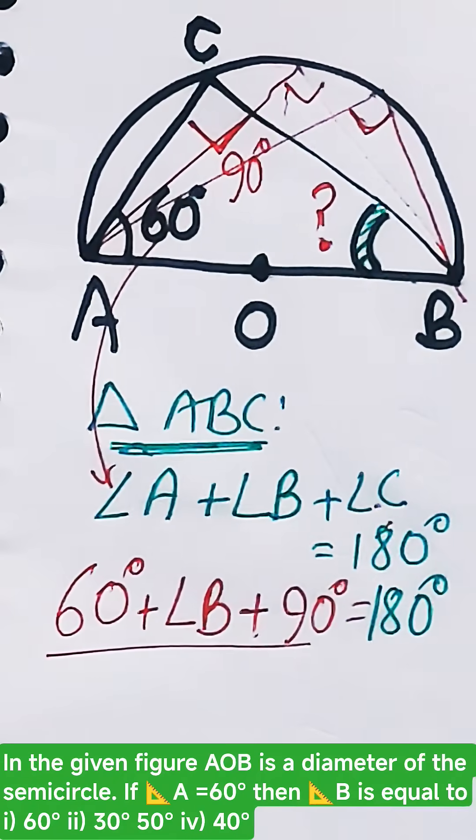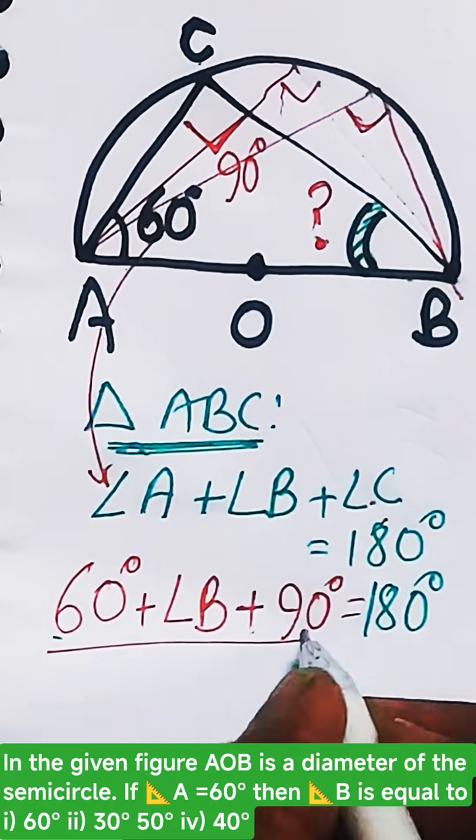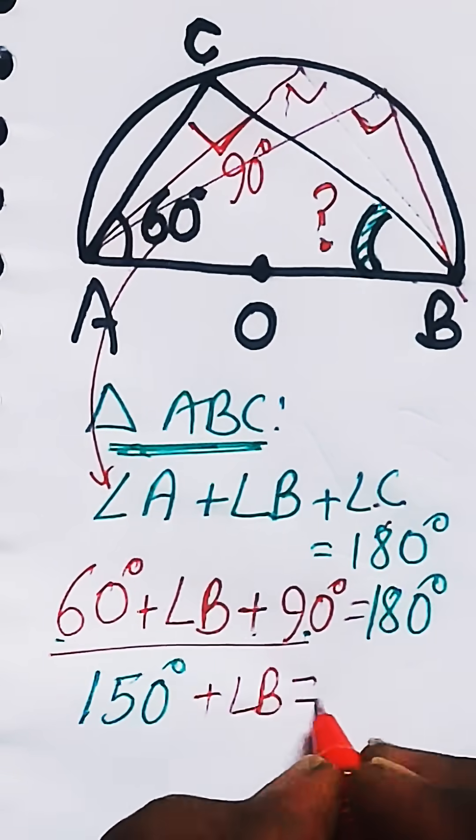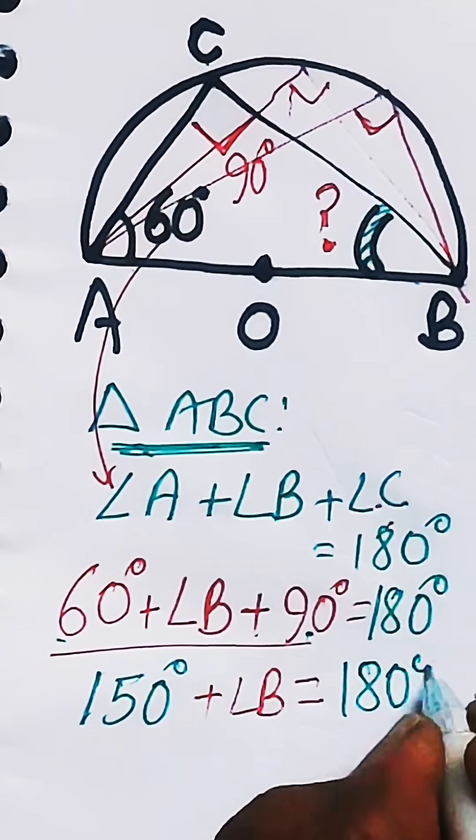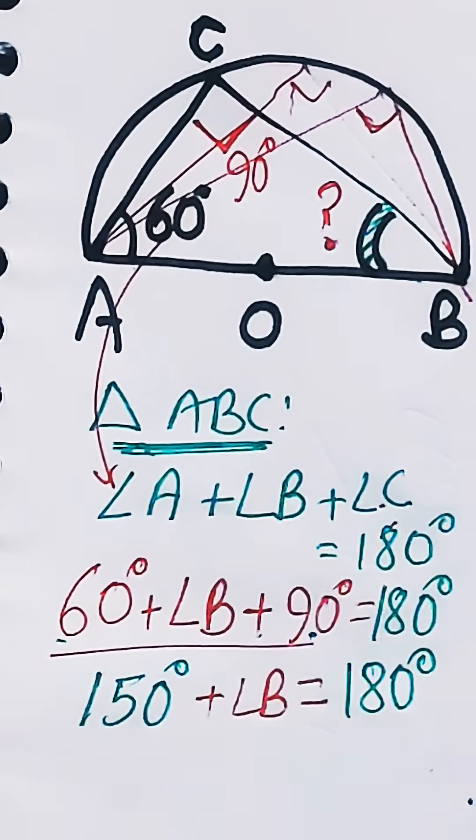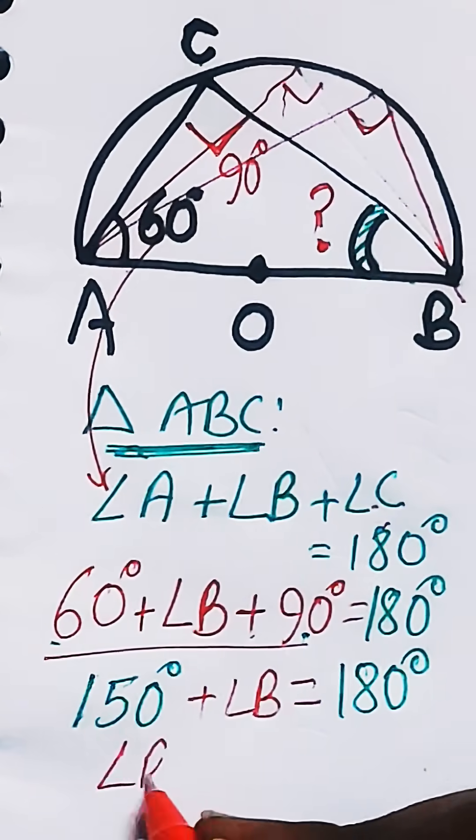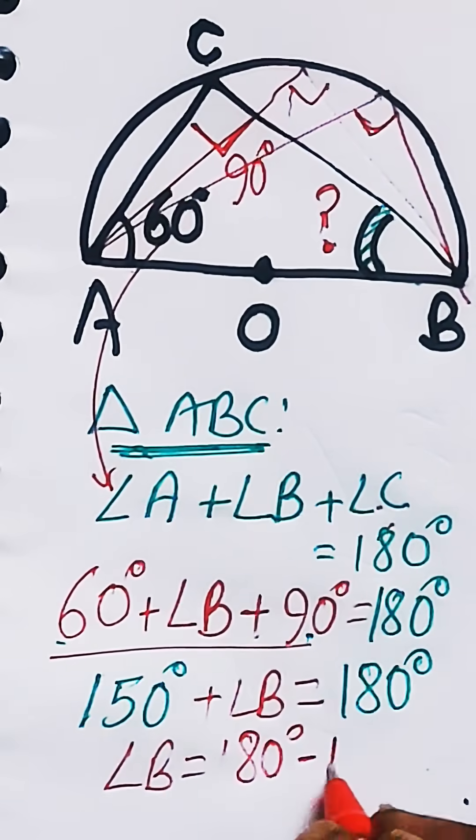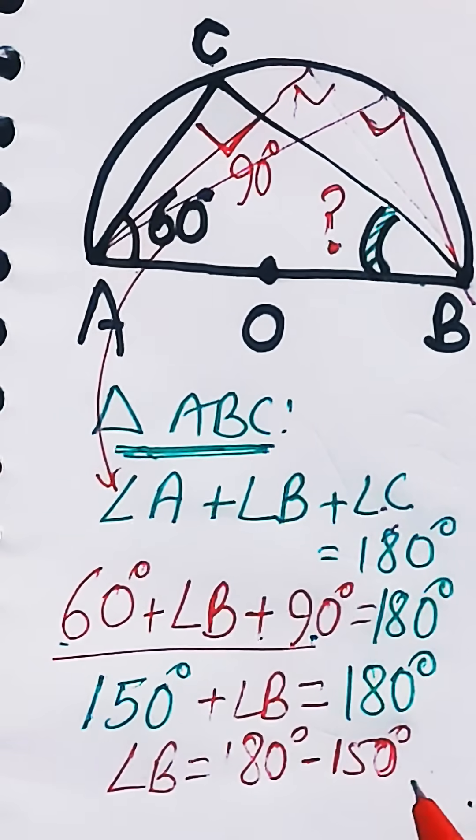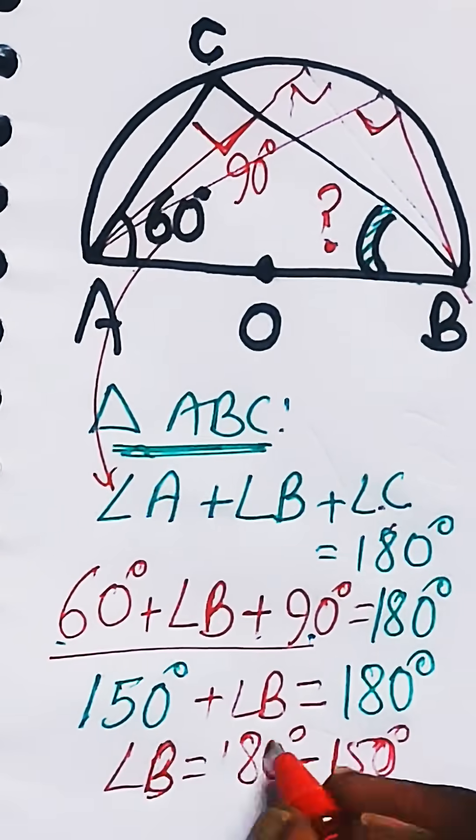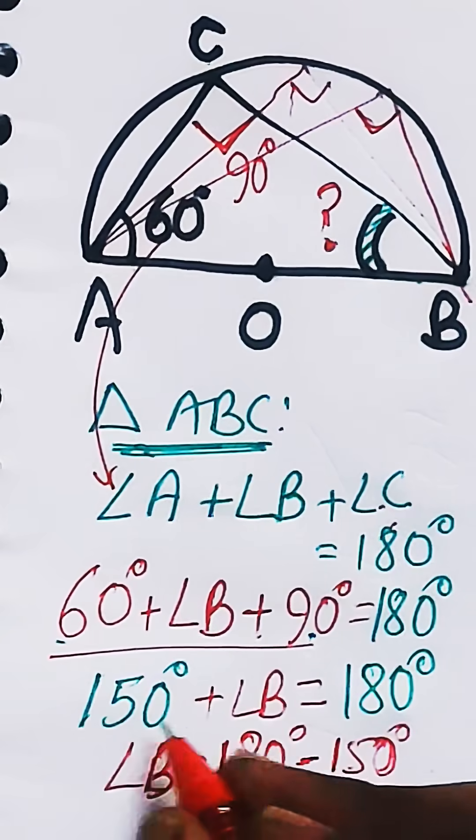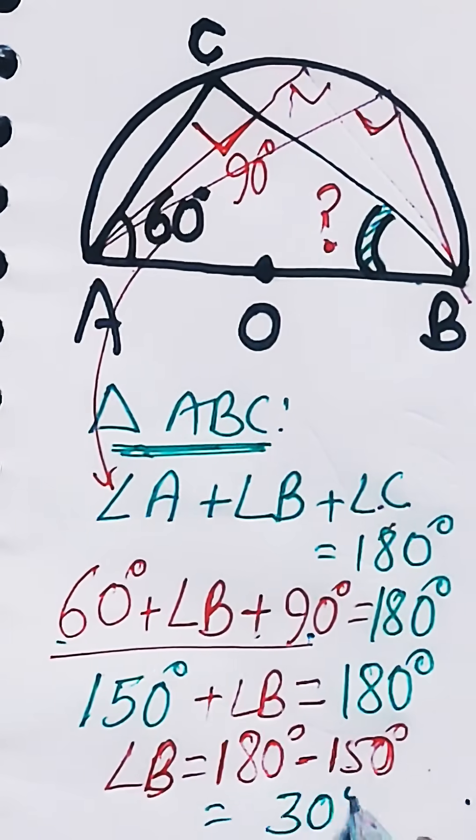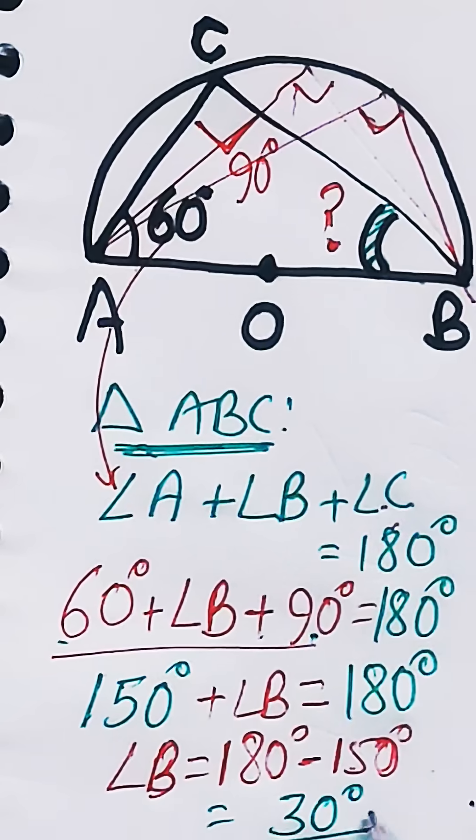Now angle B: 60 plus 90 is 150, plus angle B is equal to 180 degrees. So angle B can be calculated as 180 degrees minus 150 degrees. This will give you the value, that is 30 degrees.